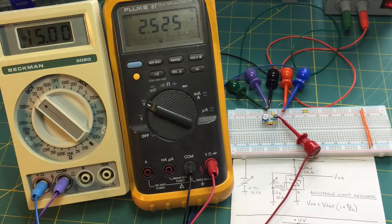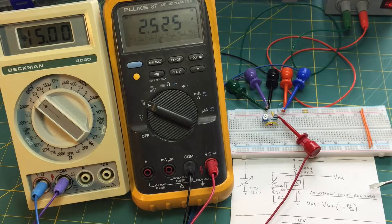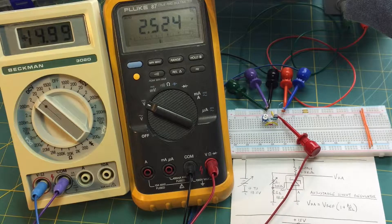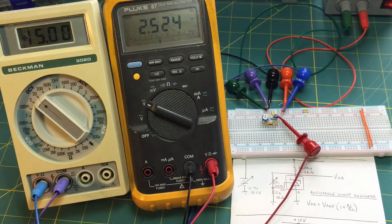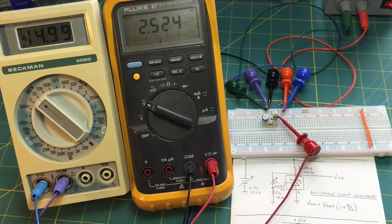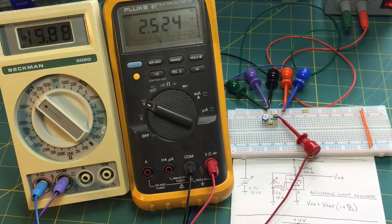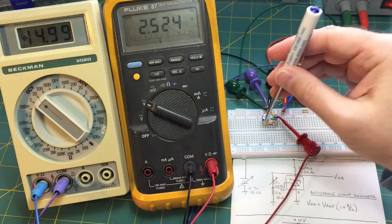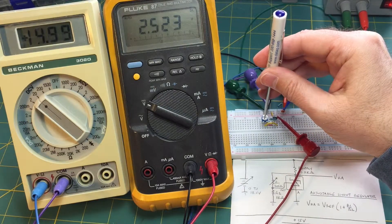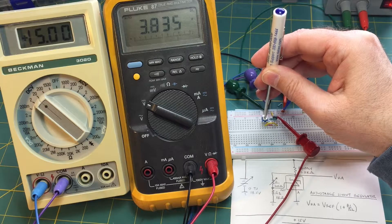Okay so I built the second circuit which is the adjustable regulator and once again this meter is showing us our input voltage, this meter is showing us our output voltage and right now we're getting 2.524 volts out with 15 volts in. I can adjust R1 in the feedback network and I can change our output voltage which is what I'm going to do now.